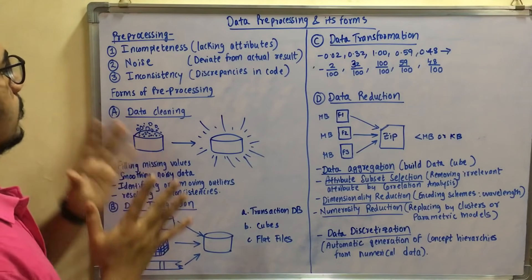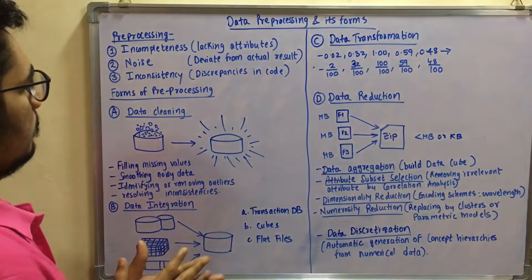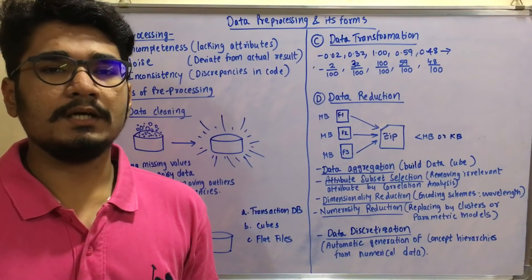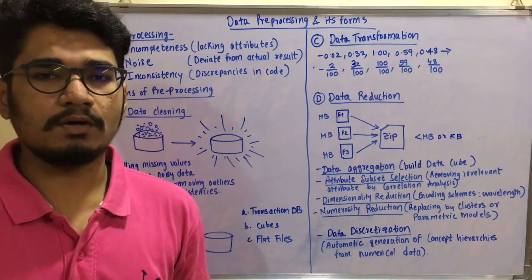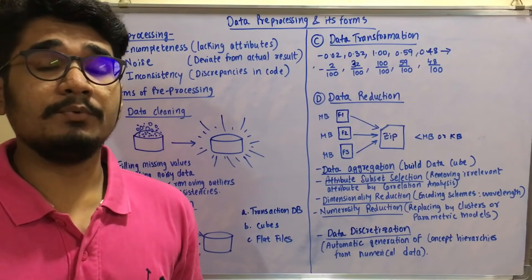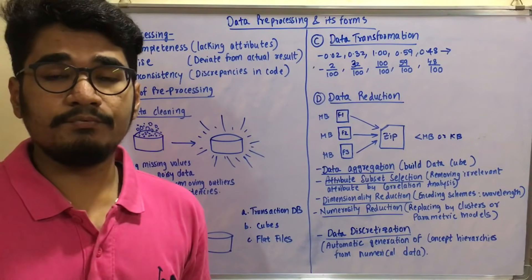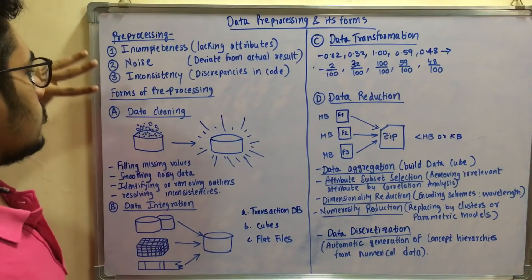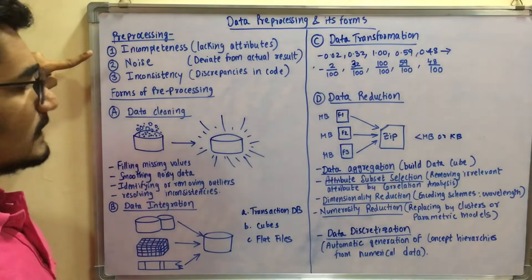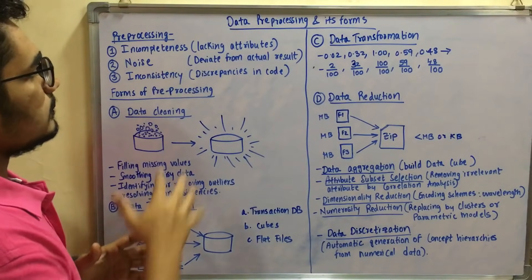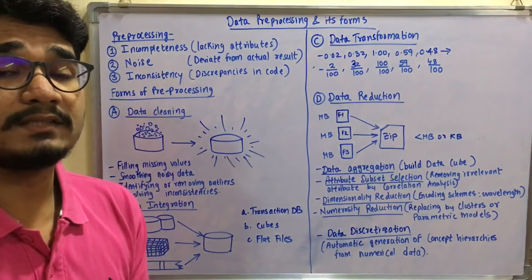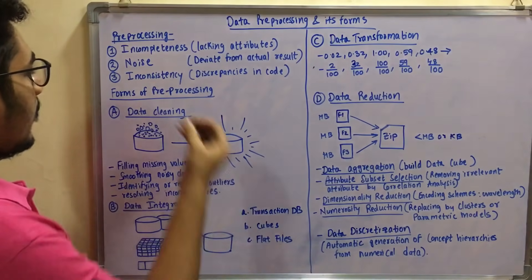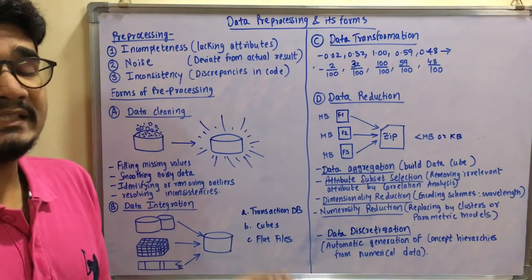First, let's understand what preprocessing is and why it is needed. When we go to get some data, data in its original form will always be contaminated with different kinds of impurities or inconsistencies. Before we input it into a system, we have to purify it into a proper format. Data is contaminated by three major threats: incompleteness, which involves lacking attributes; noise, which deviates us from getting the actual result; and inconsistencies, which are discrepancies in the data.